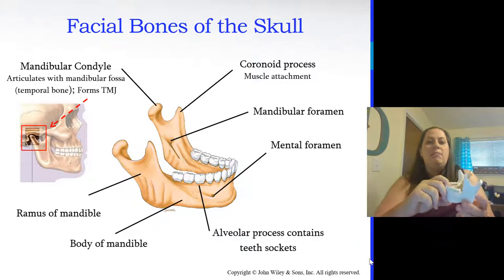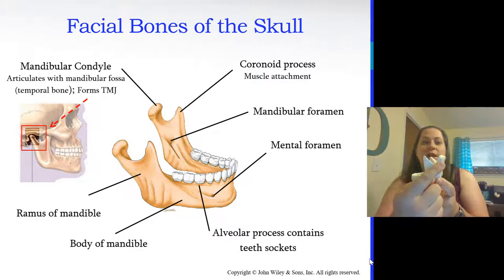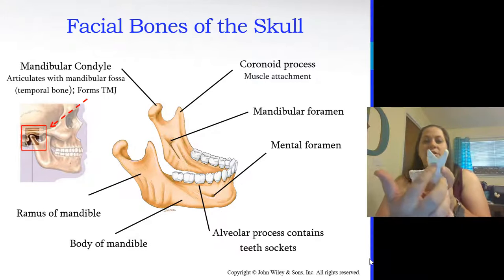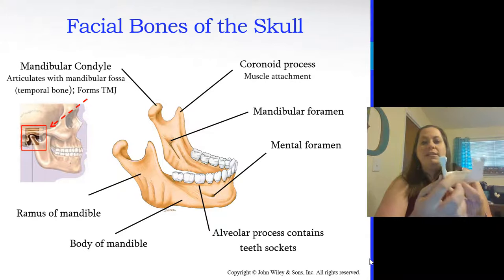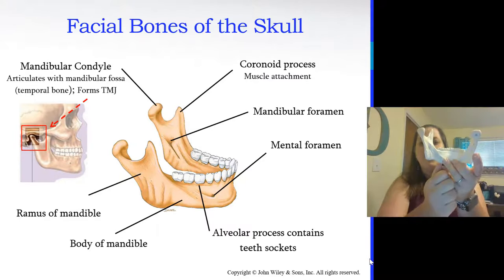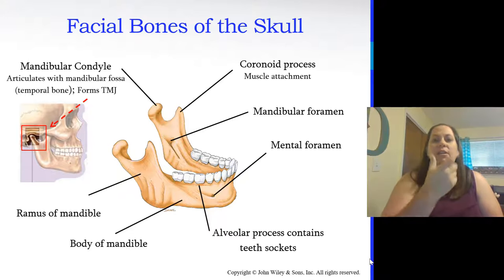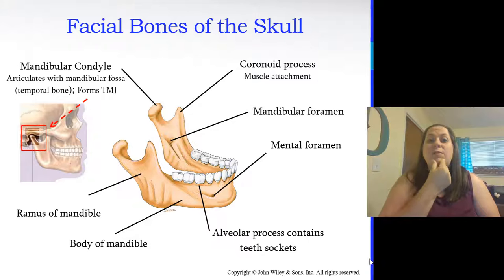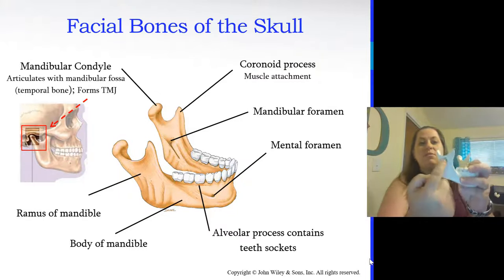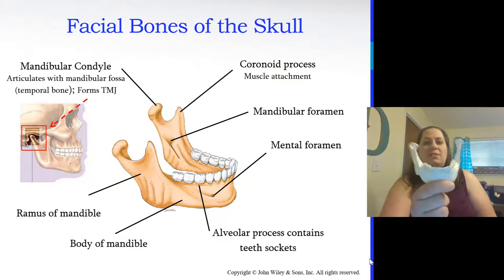The mandible has several markings: mandibular condyles that articulate with the mandibular fossa on the temporal bone to form the TMJ, and the coronoid process for muscle attachment. The mandibular foramen allows nerves and blood vessels to pass into the mandible. The mental foramen — tiny holes on each side — also allows nerve and vessel passage. The mandible also has alveolar sockets for teeth, the ramus (the arm of the mandible), and the body running across.